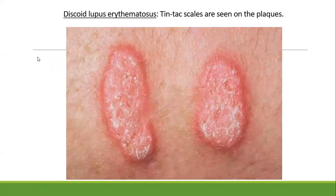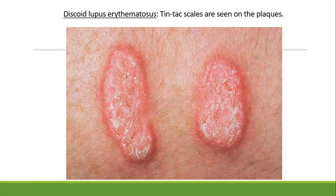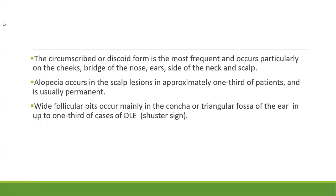A typical DLE lesion shows a plaque with thick adherent scale. The circumscribed or discoid form most frequently occurs on the cheek, bridge of nose, ear, side of neck, and scalp. Alopecia occurs in the scalp region in one-third of patients and is usually permanent. Wide follicular pits may occur in the concha or triangular fossa of the ear — the Schuster sign — one of the diagnostic features of DLE.